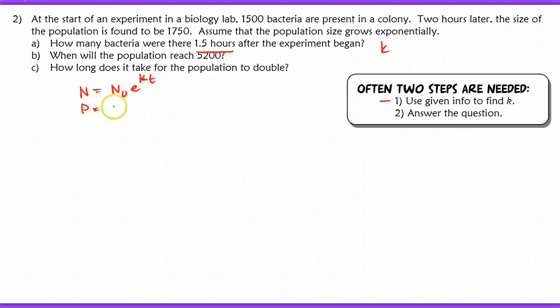We have 1,500 as our starting amount times E to the K times we have two hours later. So we're going to do 2K here. And our end result, the last amount of population here, was 1,750. And we'll solve now for K.